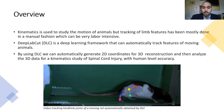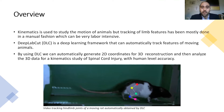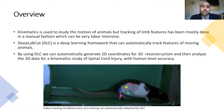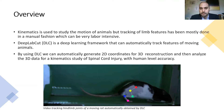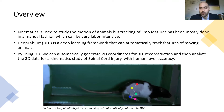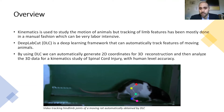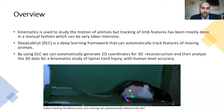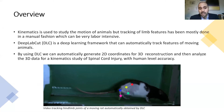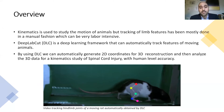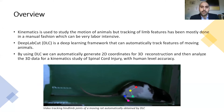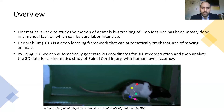DeepLabCut is a deep learning framework that can automatically track features of moving animals. By using DeepLabCut, we can automatically generate 2D coordinates for 3D reconstruction, and then analyze these 3D data for kinematics study of spinal cord injury with human-level accuracy.